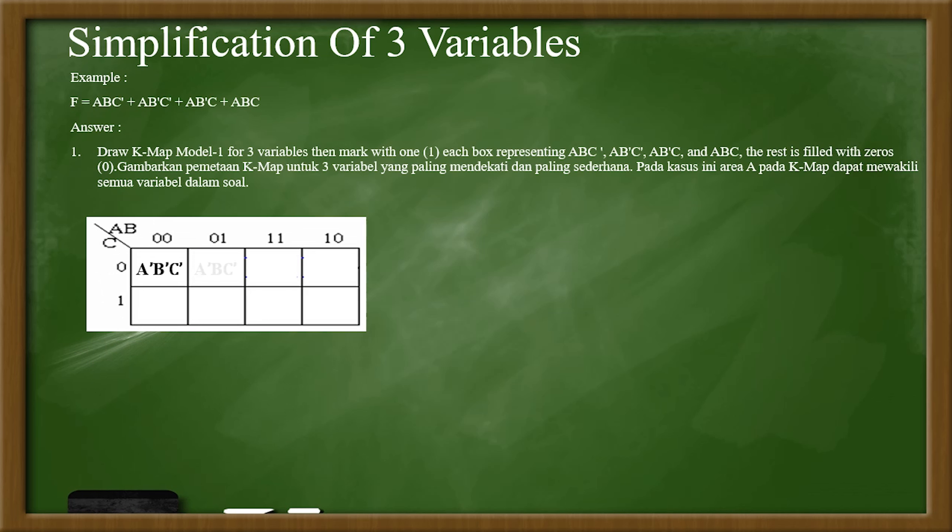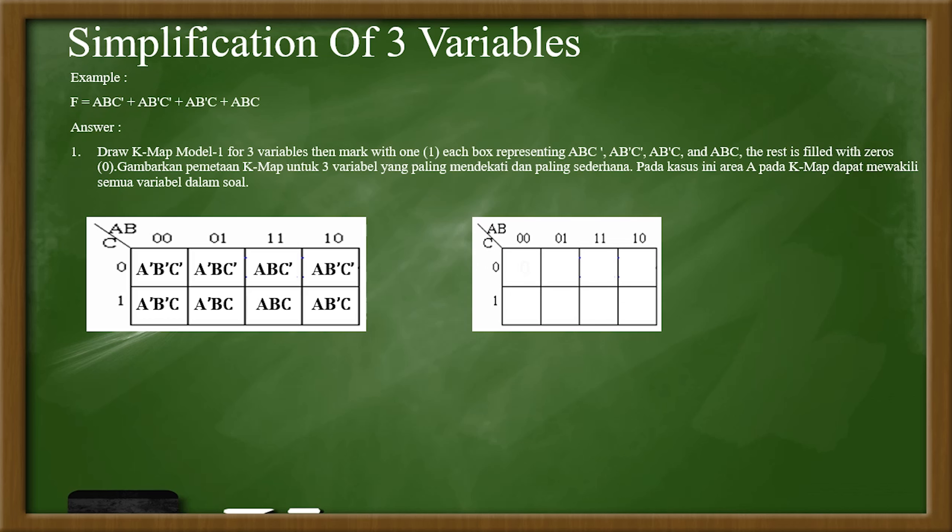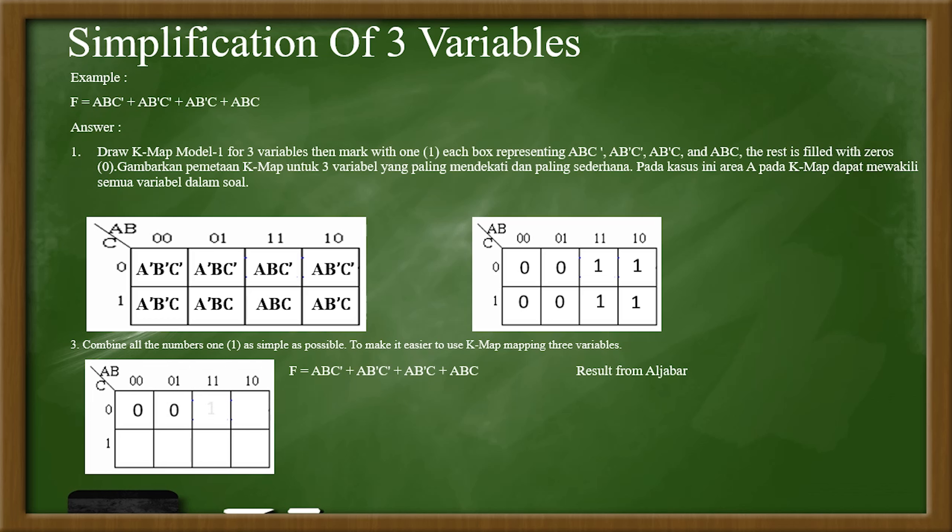Then we have the three variables where we fill the maps with one, and then we make the biggest group possible for it. As we can see, there is a good square there, and the answer is A.